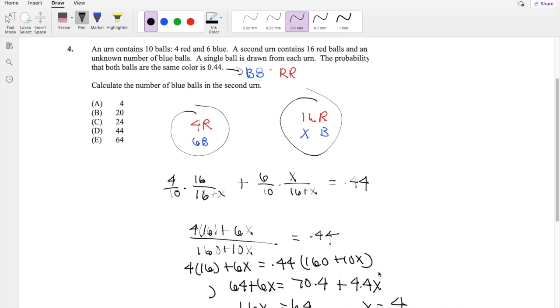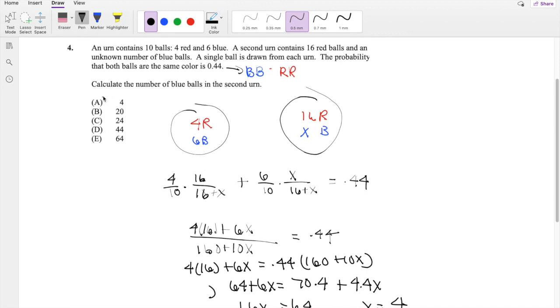So the number of blue balls in the second urn is 4, which is our answer A. If you guys have any questions, feel free to leave them down below. Otherwise, as always, make sure you like, subscribe, and share. Bye!